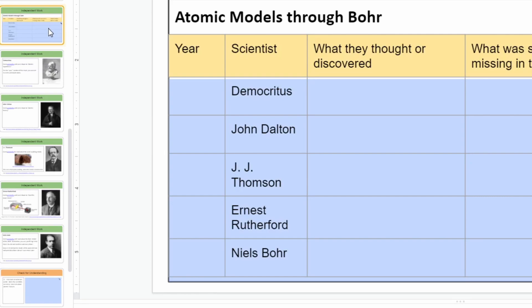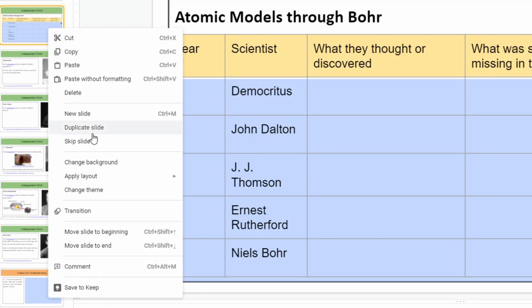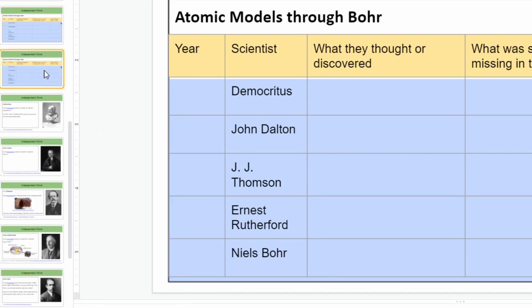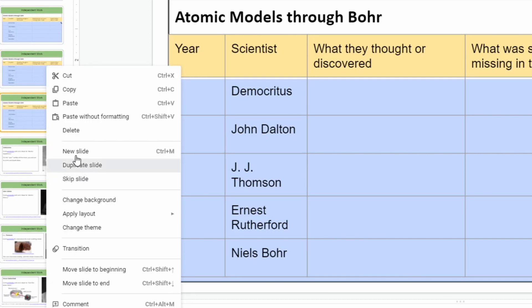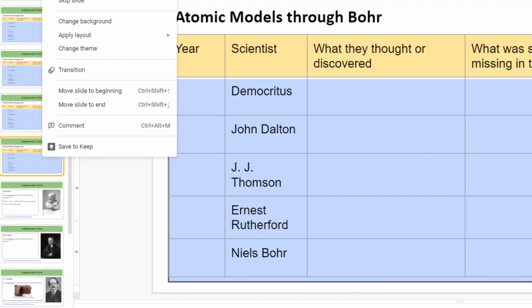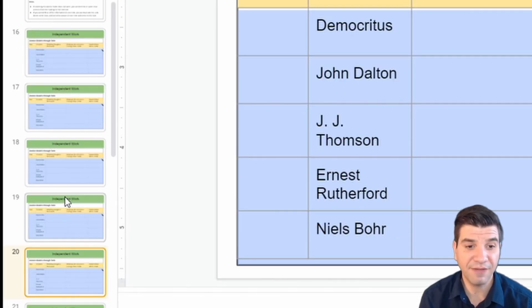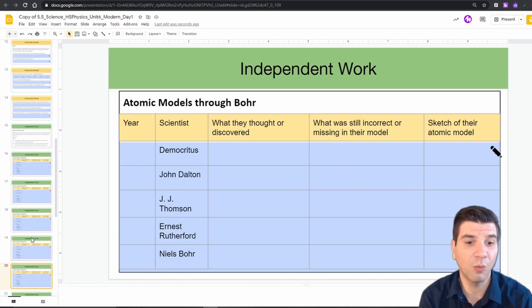Alternatively, you could right click on the slide, click duplicate and do that a total of four times to give you five copies of that slide. Now I did it five times so I can devote one slide per scientist.